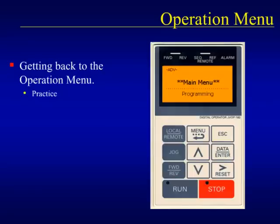The keypad shown on this slide will help us practice finding the operation menu. Clicking on the menu key of the keypad, we can cycle through the available menus of the Generation 7 drives. Once we have found the operation menu, click the Data Enter key to return to the monitor display and get our ready indication back. After successfully finding the ready indication, please proceed to the next slide.